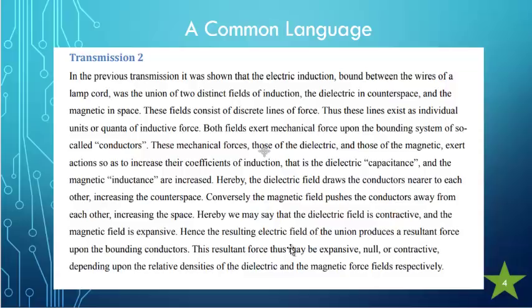The resulting electric field of the union produces a resultant force upon the bounding conductors. This resultant force may be expansive, null, or contractive, depending upon the relative densities of the dielectric and the magnetic fields, respectively.